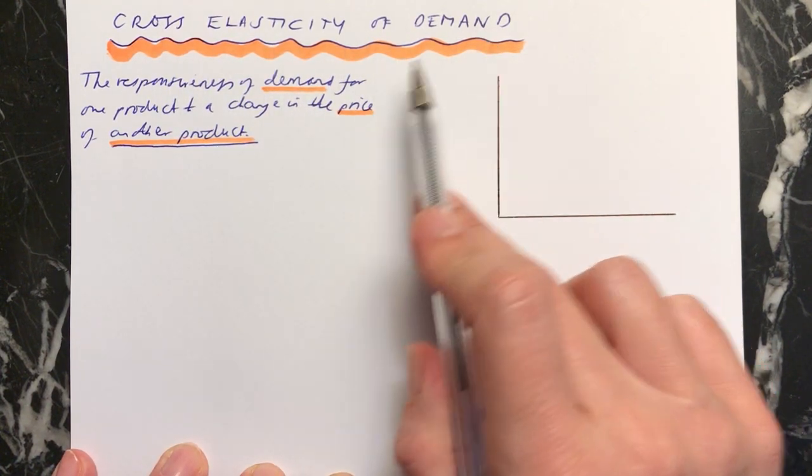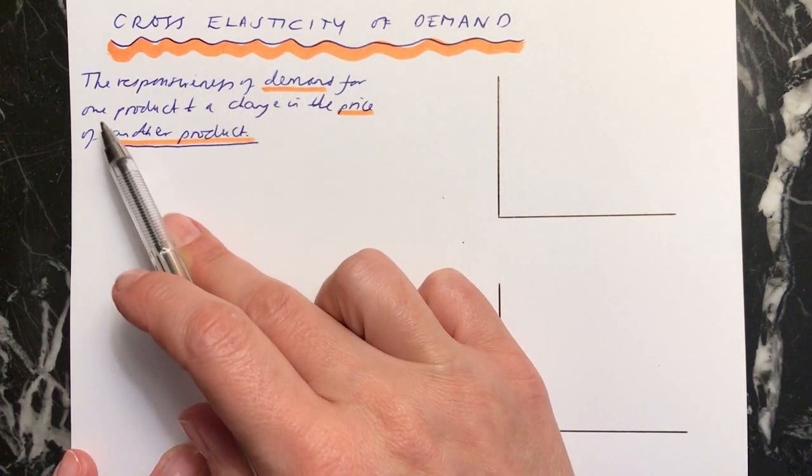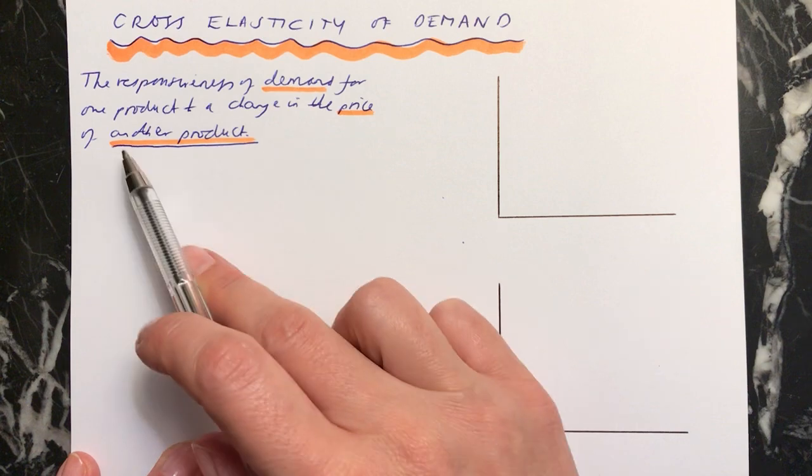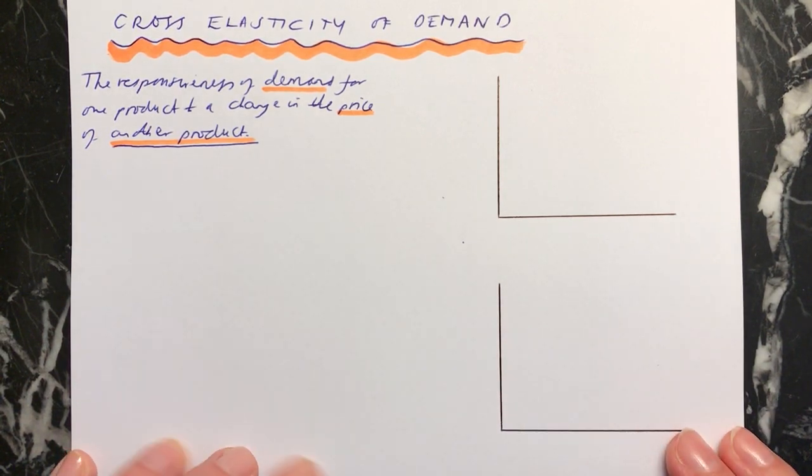This is where we're looking at two separate products. The definition is the responsiveness of demand for one product to a change in the price of another product. So we're looking at two separate products and the relationship between them.